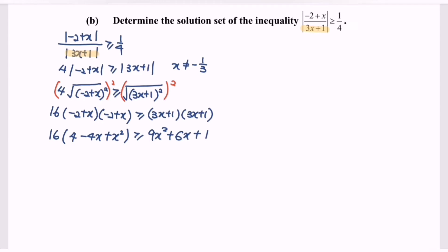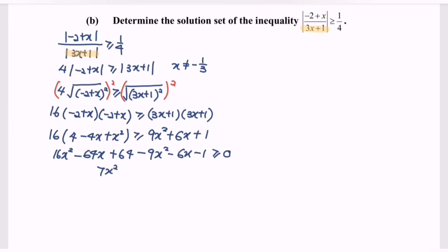Expanding the left side and moving everything to one side, we get 16x squared minus 9x squared minus 64x minus 6x plus 64 minus 1 greater than or equal to 0. Simplifying, we have 7x squared minus 70x plus 63 greater than or equal to 0, which simplifies to x squared minus 10x plus 9 greater than or equal to 0.